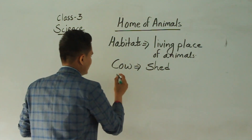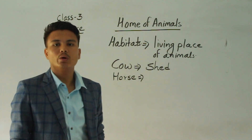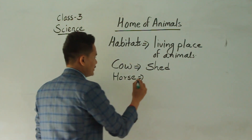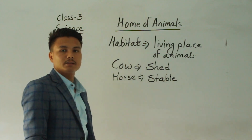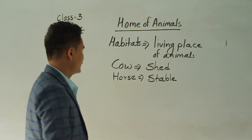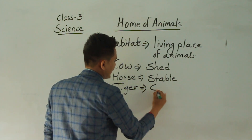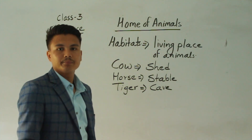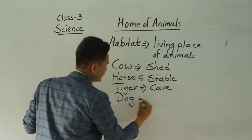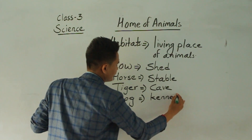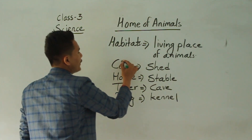So another example: where does a horse live? Obviously, a horse lives in a stable. Where does a tiger or lion live? Tiger and lion live in a cave. So where does a dog live? These are the habitats of different types of animals.